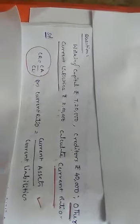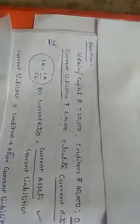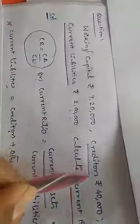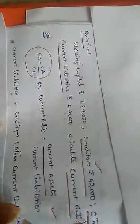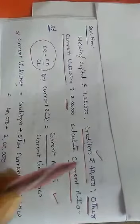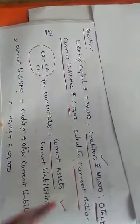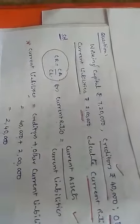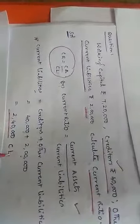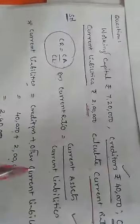Current liabilities information is available. Current liabilities equals creditors plus other current liabilities. Creditors are 40,000 and other current liabilities are 2 lakhs, so the total current liabilities come to 2 lakhs 40 thousand.